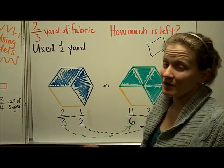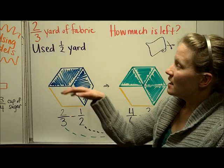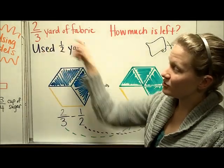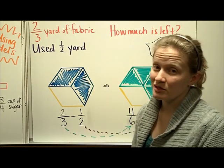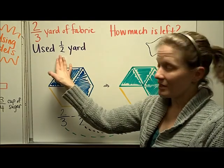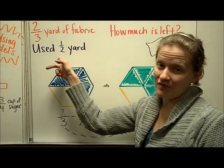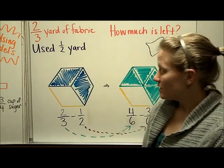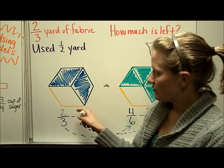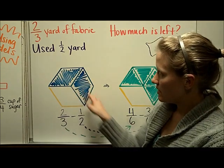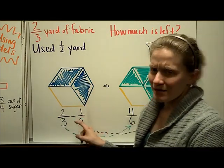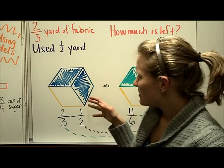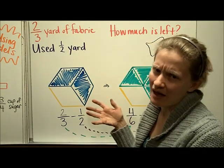For my last problem, I'm going to use pattern block pieces again. You are doing a project in Stitching Club and you bought two-thirds of a yard of fabric. Your first project used one-half of the yard of fabric, and you want to figure out how much is left. You can represent the two-thirds of a yard here — here's a third and another third. And then you need to think about taking away one-half, but I don't have any piece that's exactly equal to one-half.